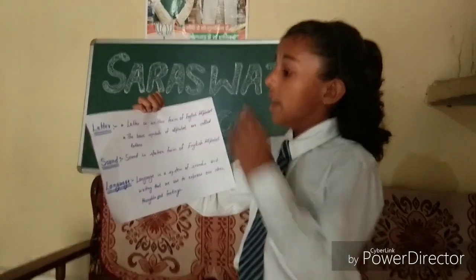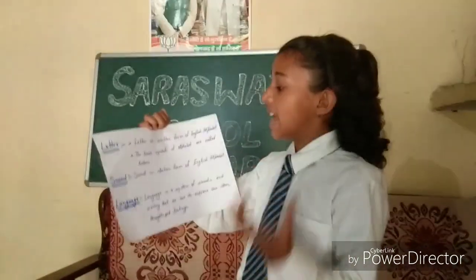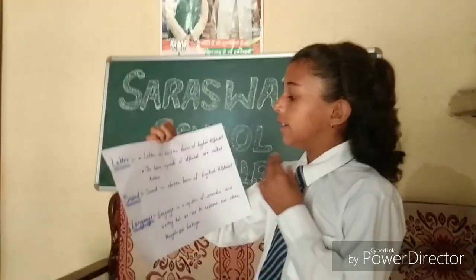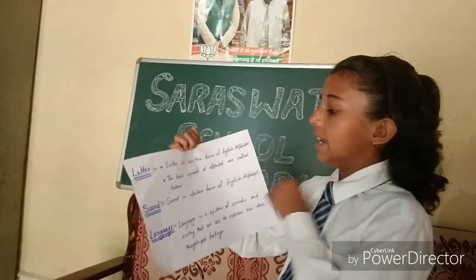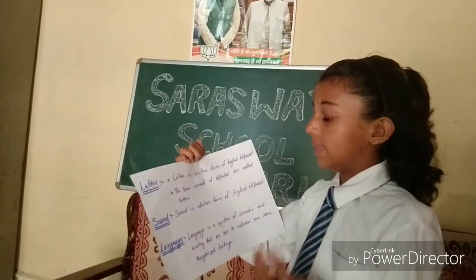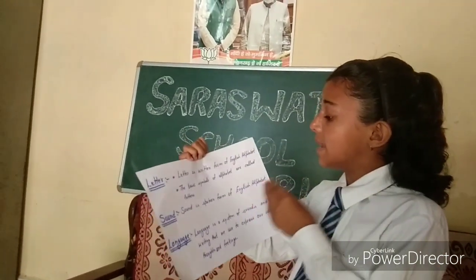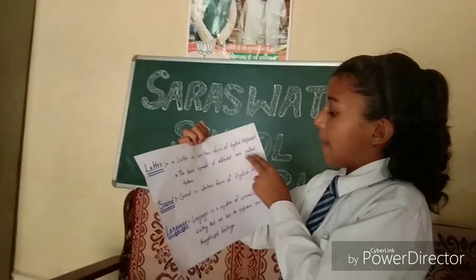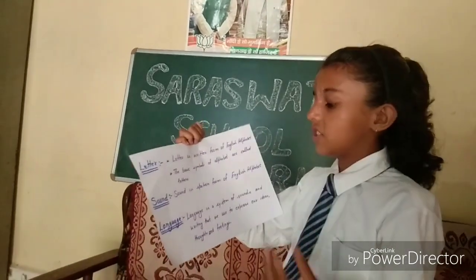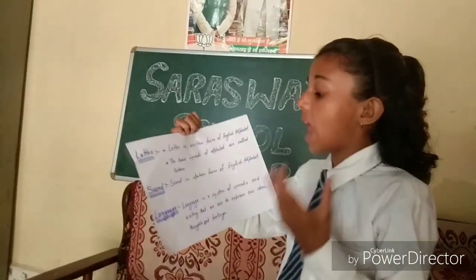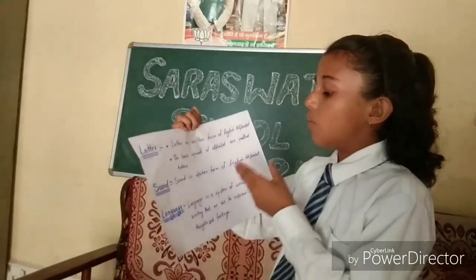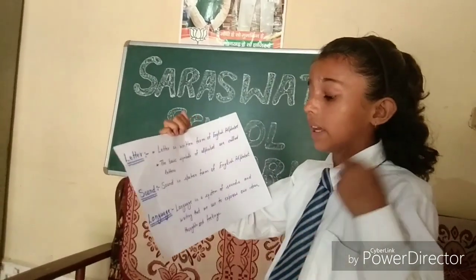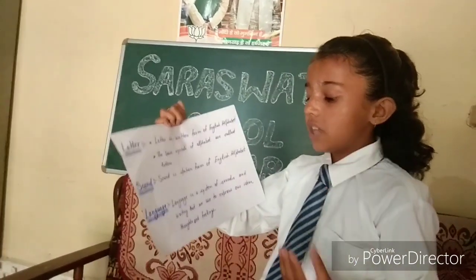Letter: a letter is the written form of an English alphabet. The basic symbols of the alphabet are called letters. Sound: sound is the spoken form of the English alphabet.